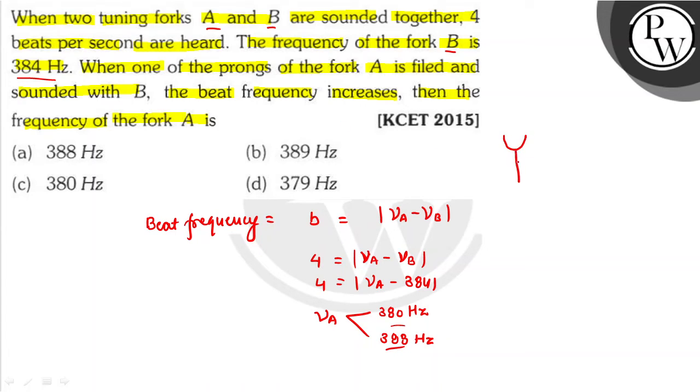But the question says that when the tuning fork prong is filed, the frequency increases. On filing, the tuning frequency of tuning fork A increases. Suppose we take that it increases, we take 380 and increment by 2, what happens? 382. Then we take 388 and increment, we get 390.